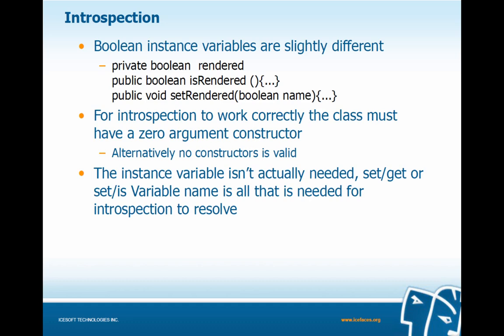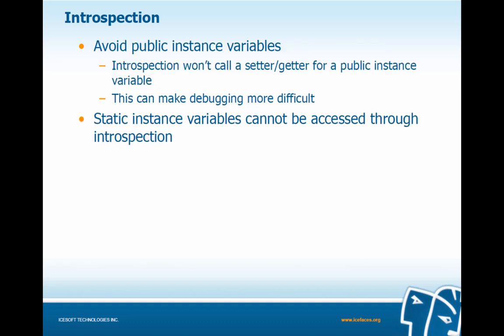Boolean instance variables are slightly different, with the difference being that instead of a getRendered call, we have isRendered. For introspection to work correctly, the class must have a zero argument constructor, but a constructor is not required. It's worth noting that the instance variable isn't actually needed for introspection to resolve — all we need is the getter and setter in our managed bean. We should avoid public instance variables since introspection won't call our getters and setters, and they can make debugging more difficult. Static instance variables also cannot be accessed through introspection.